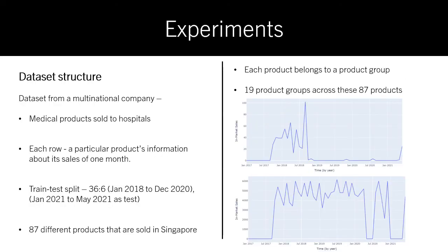The experiments we conduct are on a dataset provided by a multinational company which sells medical products to hospitals. Each row in this dataset consists of a particular product's information about its sales for one month. We keep 36 samples for training and 6 samples for testing, and we utilize this algorithm on 87 different products sold in Singapore.